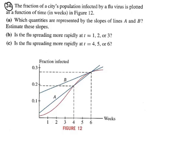Okay, on number 24 it says the fraction of a city's population infected by a flu virus is plotted as a function of time in weeks. It says which quantities are represented by the slopes of lines A and B, and they want you to estimate the slopes.